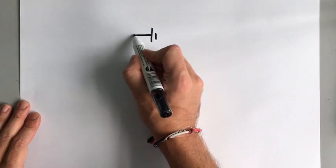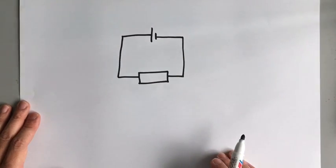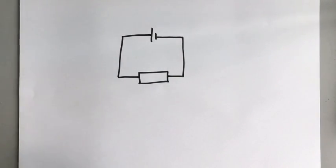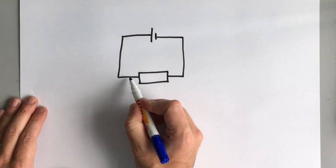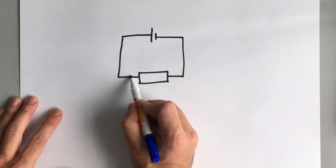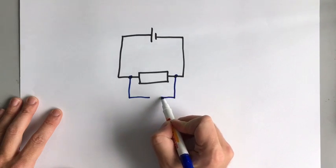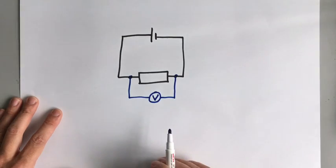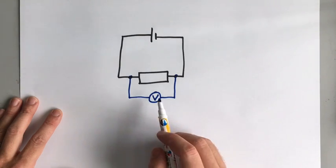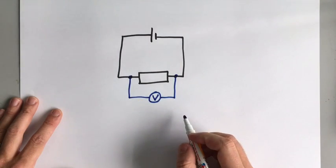You can actually measure all these quantities if you have a simple circuit with a component. Let's say we wanted to find out the resistance of a resistor. First we need to measure the voltage, the potential difference — the potential difference and the voltage are basically the same thing. We use what is called a voltmeter, which is a circle with a V in it on the circuit diagram. This voltmeter tells us the difference in potential between two points in the circuit.